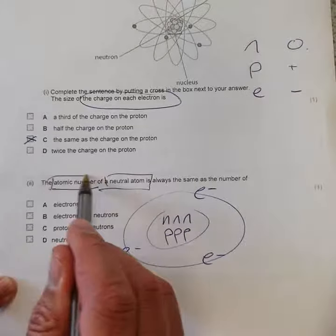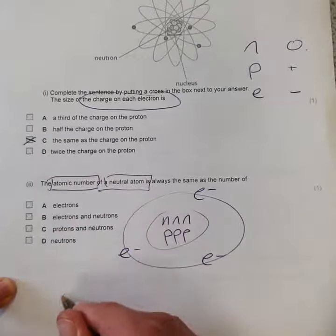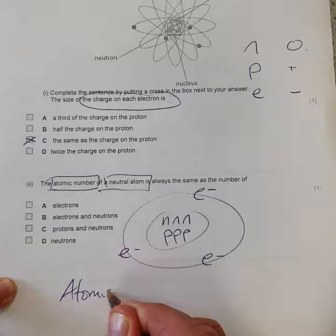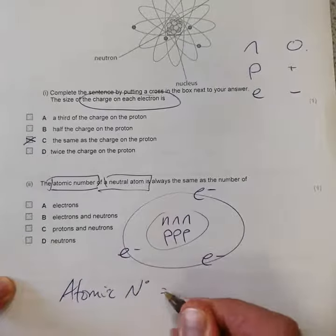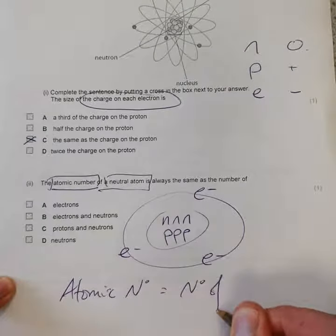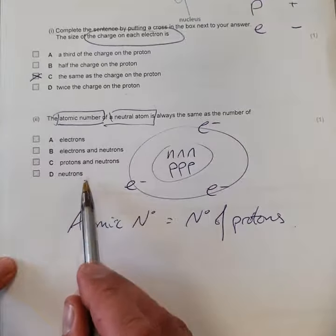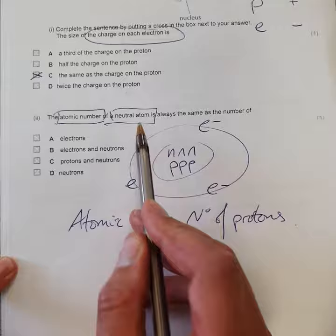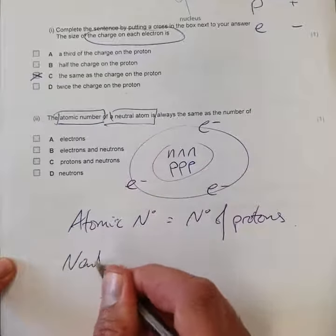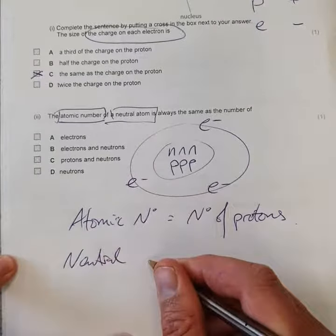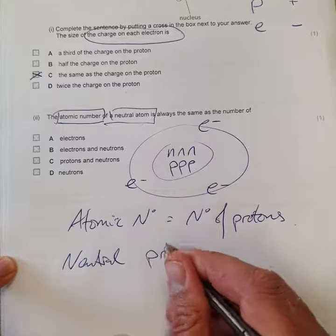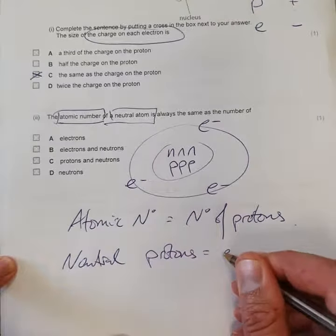We'll ask for the atomic number. So the atomic number is the number of protons. But if you look here, hang on a second, we haven't got that as an answer. Because we're actually told a second bit of information. It's a neutral atom. So in a neutral atom, the protons is going to be equal to the number of electrons.